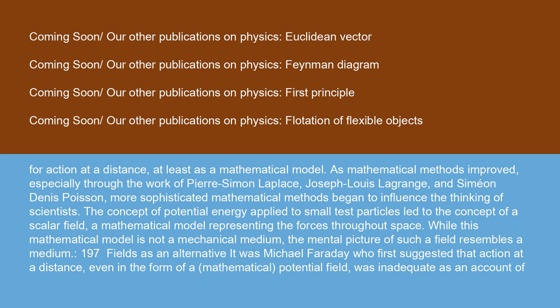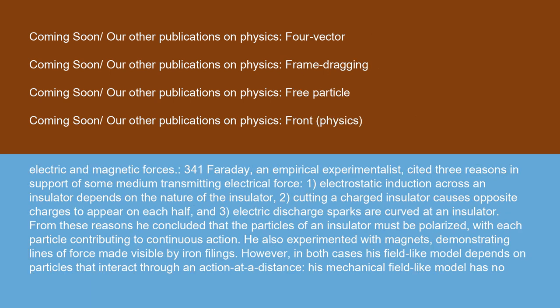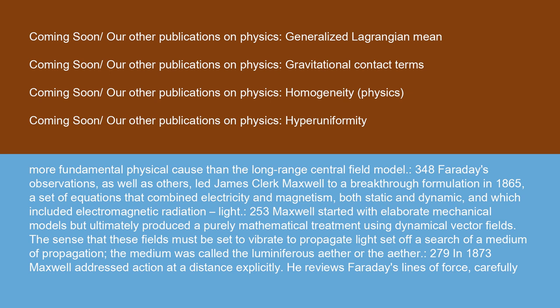Fields as an alternative: It was Michael Faraday who first suggested that action at a distance, even in the form of a mathematical potential field, was inadequate as an account of electric and magnetic forces. Faraday, an empirical experimentalist, cited three reasons in support of some medium transmitting electrical force: 1. Electrostatic induction across an insulator depends on the nature of the insulator. 2. Cutting a charged insulator causes opposite charges to appear on each half. And 3. Electric discharge sparks are curved at an insulator. From these reasons, he concluded that the particles of an insulator must be polarized, with each particle contributing to continuous action. He also experimented with magnets, demonstrating lines of force made visible by iron filings. However, in both cases, his field-like model depends on particles that interact through an action at a distance. His mechanical field-like model has no more fundamental physical cause than the long-range central field model.